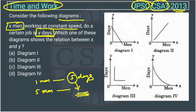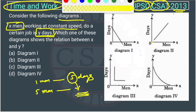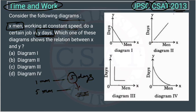Let's look at the diagrams one by one. Suppose here two men are working and it takes five days. Now four men are working — and this diagram shows it taking more days than before. That is wrong, because the number of days should reduce. The number of men and number of days are inversely proportional.